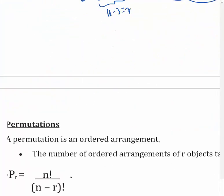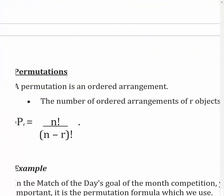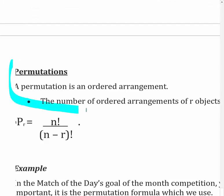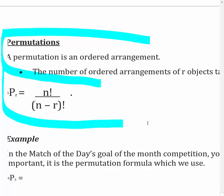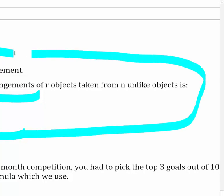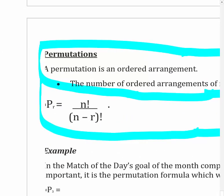Now, permutations. Above we talked about combinations; now we talk about permutations. A permutation is an ordered arrangement. The number of ordered arrangements of r objects taken from n unlike objects uses the formula nPr: n factorial over (n minus r) factorial. The formula is almost the same as combinations but it's missing the r factorial in the denominator - that's the key difference.